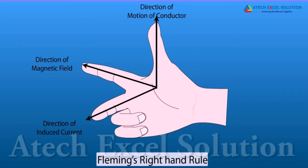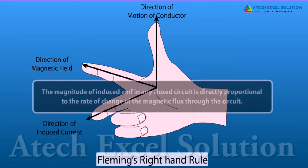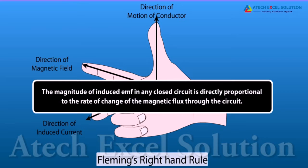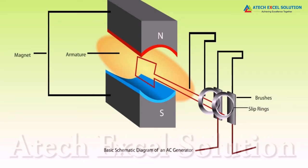The magnitude of induced emf in any closed circuit is directly proportional to the rate of change of the magnetic flux through the circuit. Now can we generate electricity using the phenomenon of electromagnetic induction? Yes, we can. Electric generator is used to generate electricity on a large scale. In an electric generator, mechanical energy is used to rotate a conductor in magnetic field to produce electricity.